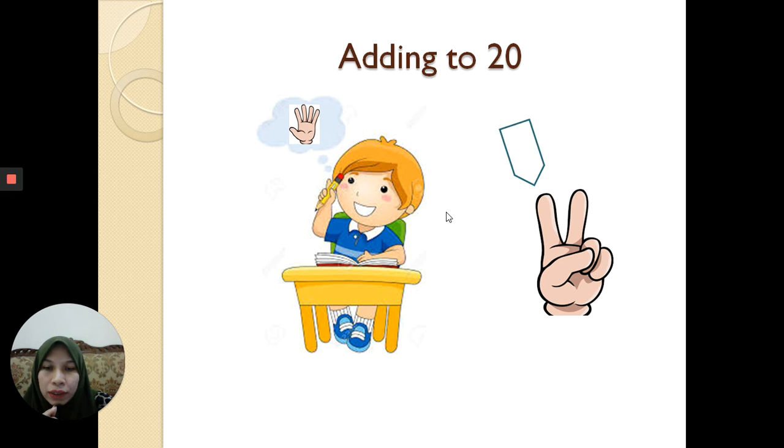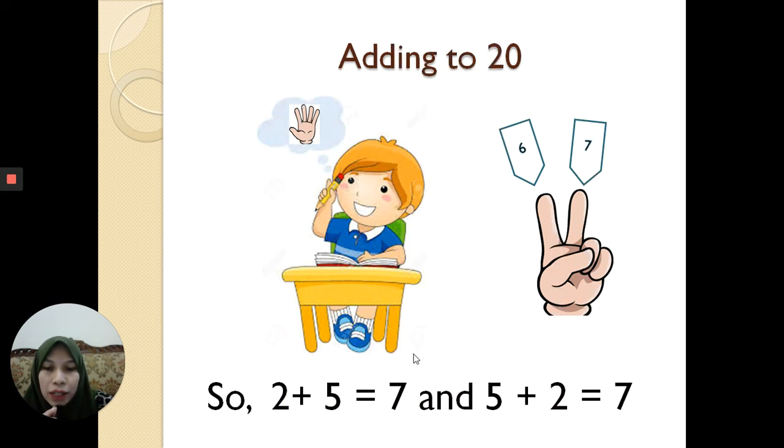Then start counting the number after number 5. Put 5 in your head and 2 on your fingers, and then start counting the number after number 5.